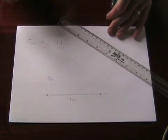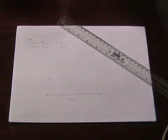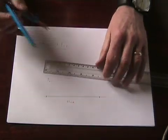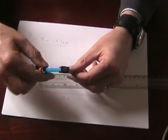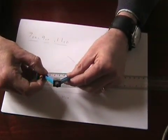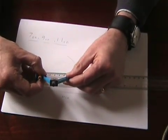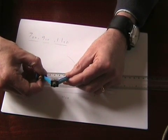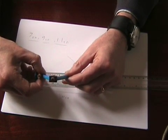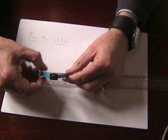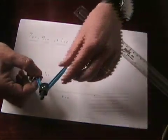Now the third line which is 7cm. So again I open my compasses to 7cm and it can never be awfully exact with this sort of cheap equipment, the sort of thing you'd be using yourself.